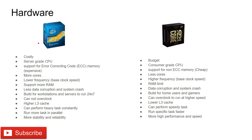Xeon processors support more RAM than Core processors. With Xeon you can go up to 128 GB of RAM and beyond, while with Core processors you are mostly limited to 32 GB or 64 GB. Check the RAM limit before buying a new processor. Xeon also has less data corruption and fewer system crashes compared to Core processors. Xeon is built for workstations and servers designed to run 24/7.